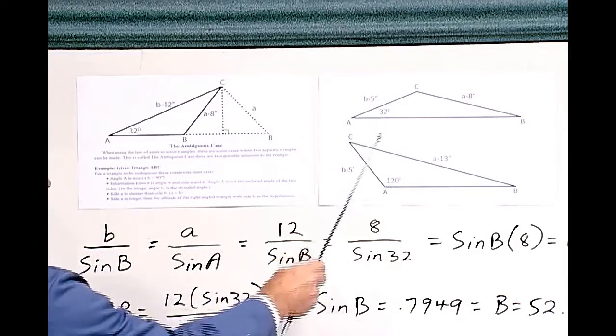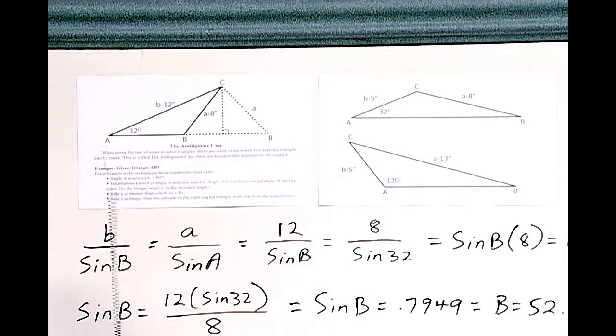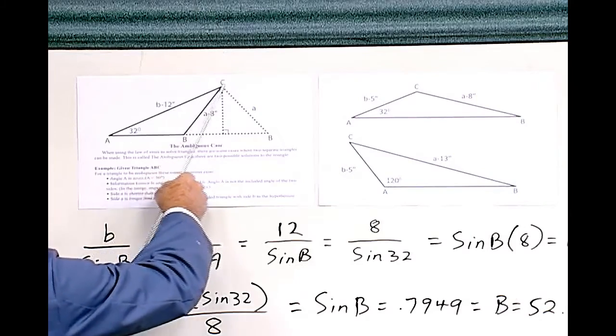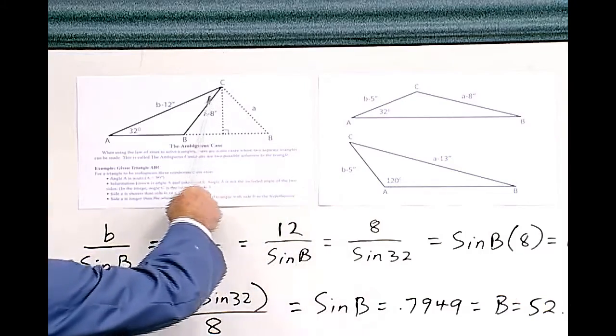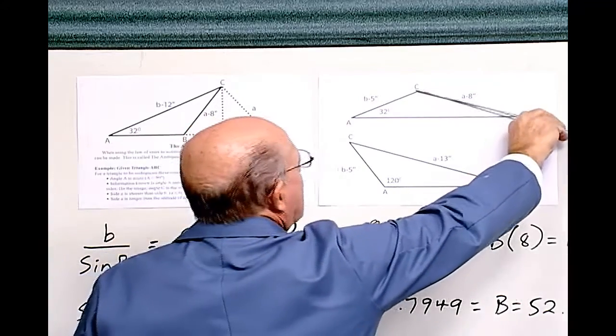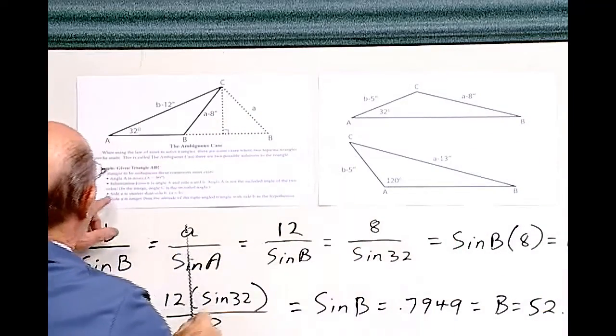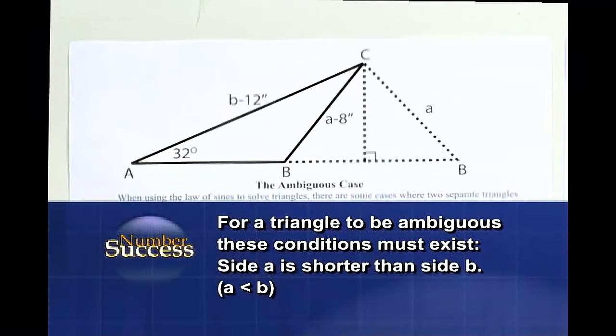Now, these are not ambiguous triangles, but this one is. And this is the reason why. Notice that you can swing this A over here. And one of the rules is: for a triangle to be ambiguous, these conditions must exist. Side A is shorter than side B.